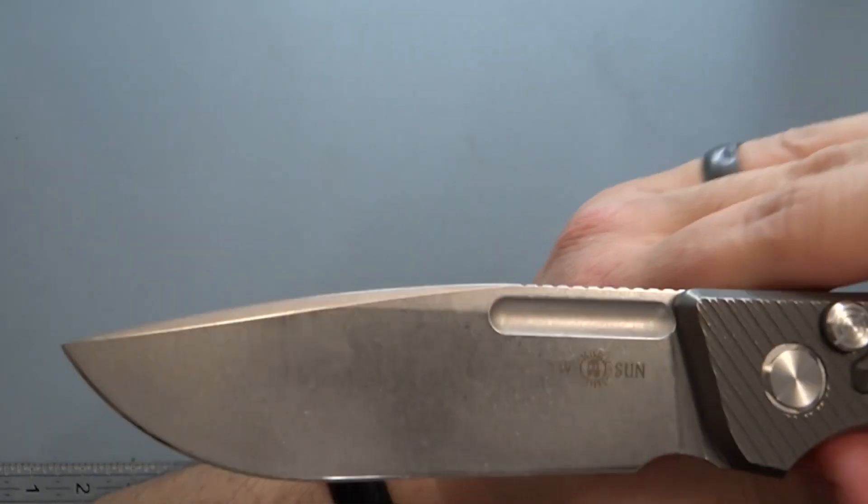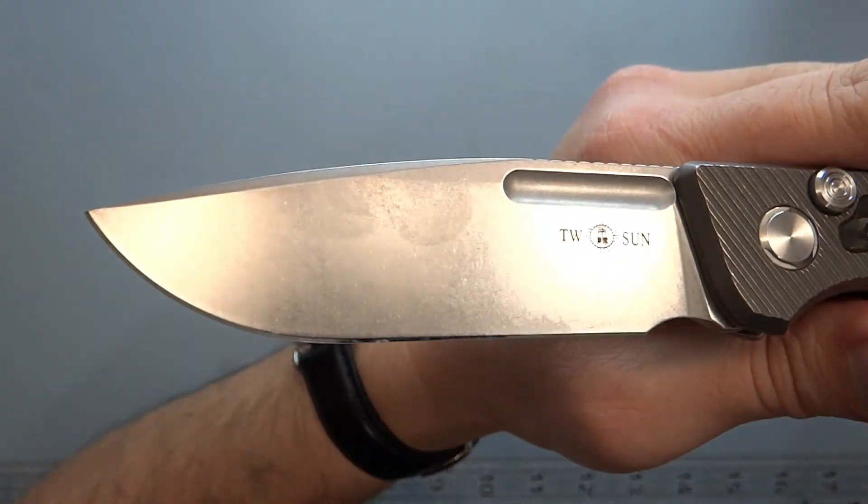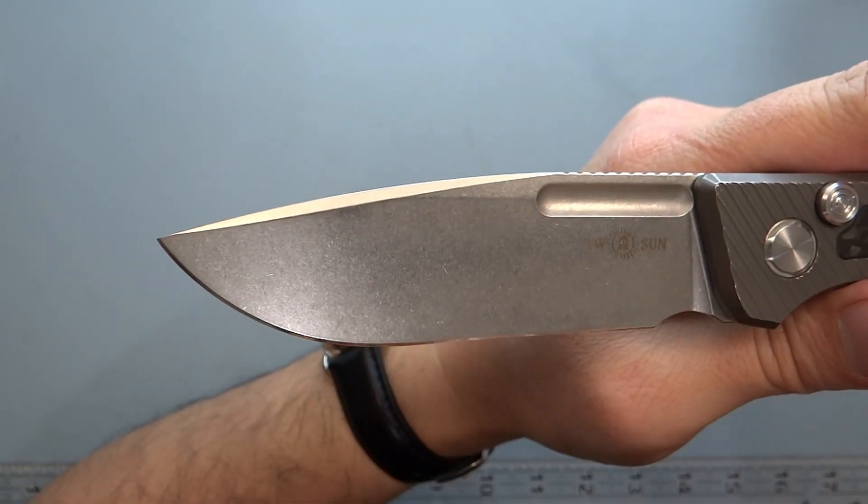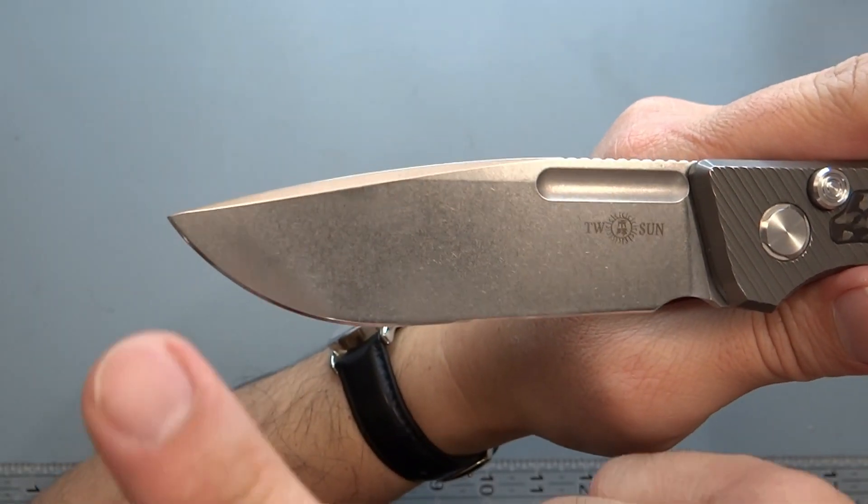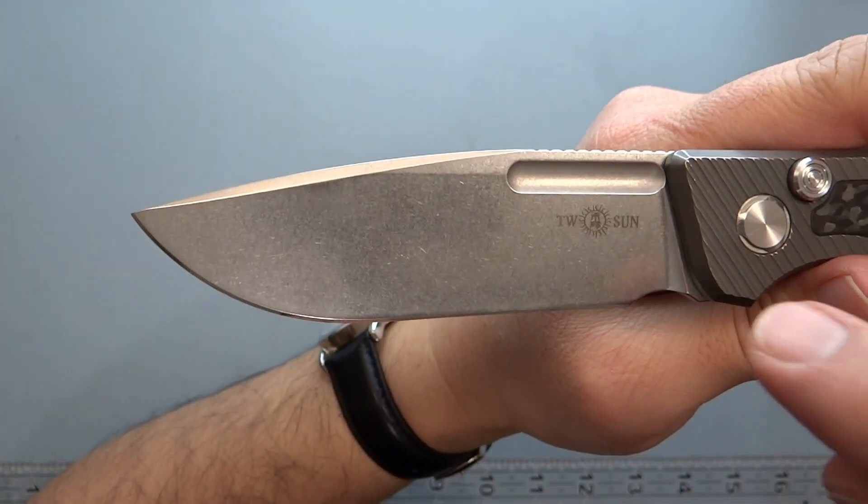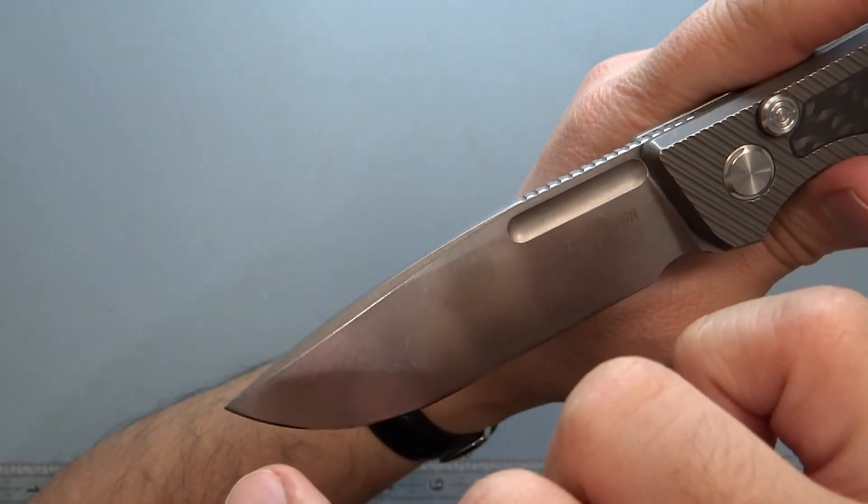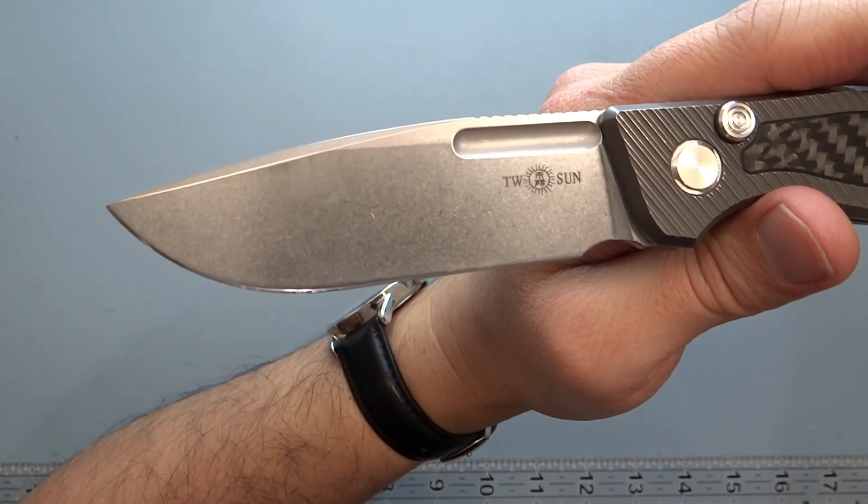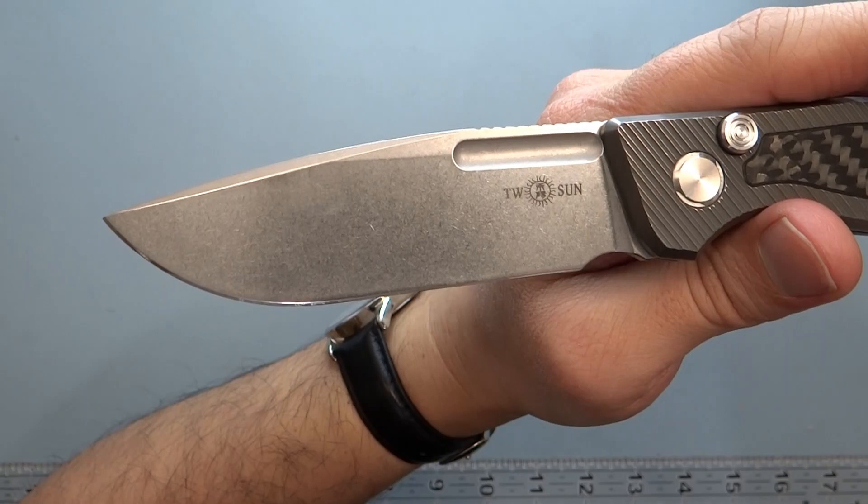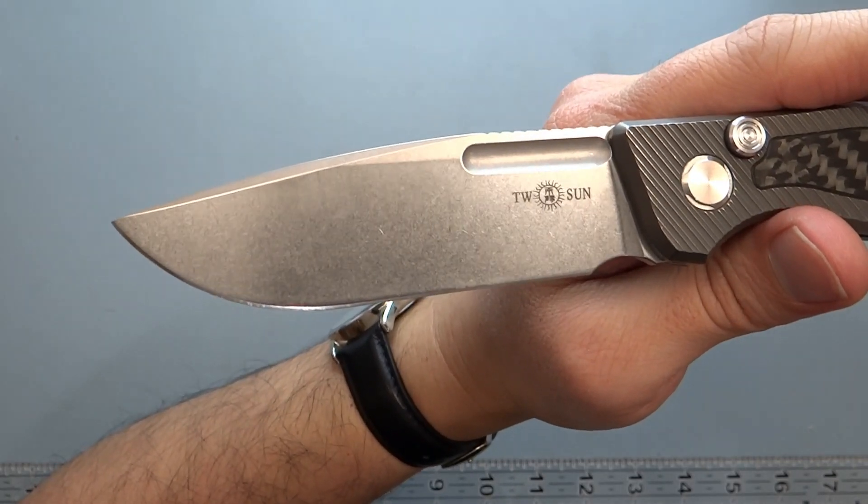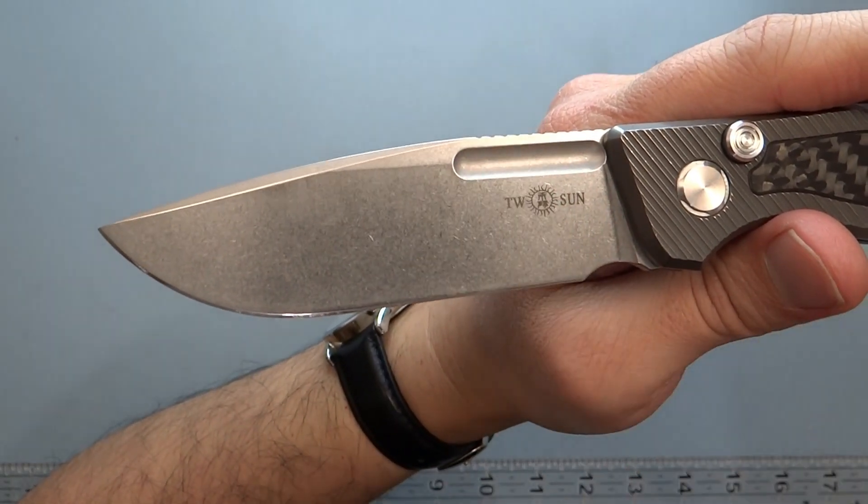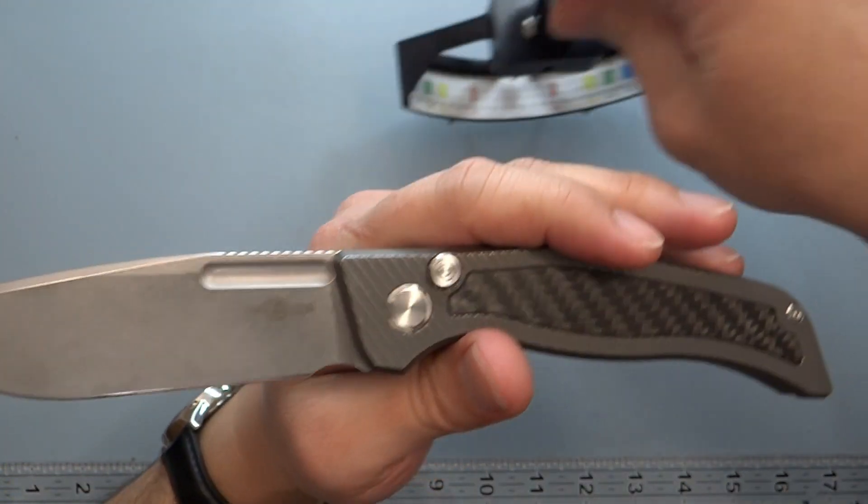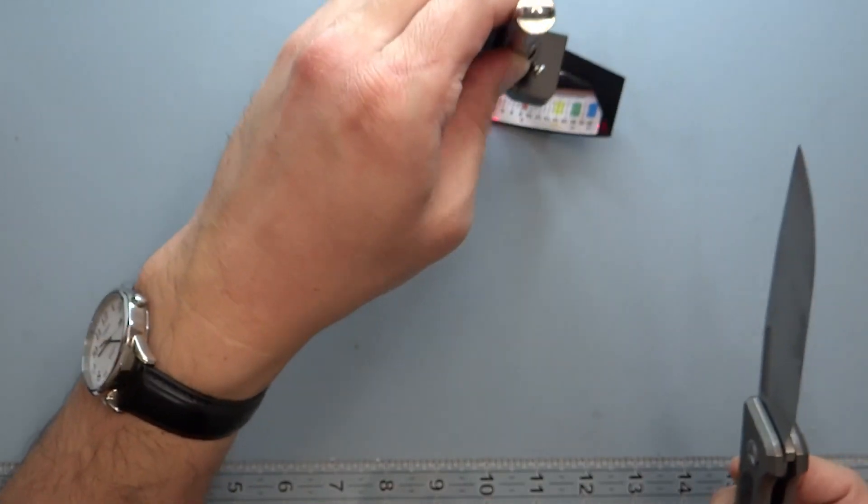Blade length is going to be pretty substantial. This is a stone wash finish, about 3.95 inches. Surprisingly, the cutting edge is about 3.95 too, so basically I lay it on a piece of paper and rotate it over to get that full cutting edge. It's interesting that blade length and cutting edge are the same. It's a flat grind for this one.